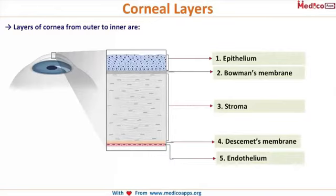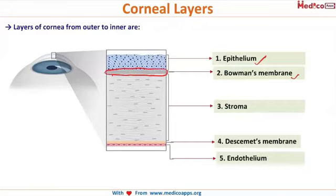The cornea is made up of five main layers. The first one, as you can see, is the epithelium, followed by Bowman's membrane. After Bowman's membrane comes the stroma, which is a very important part of the cornea. The stroma is followed towards the inner side by Descemet's membrane, and the last and most important layer is the endothelium.